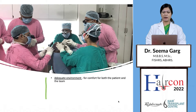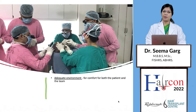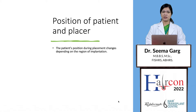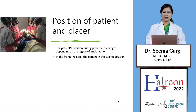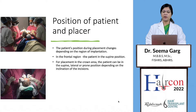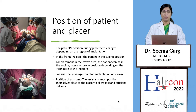An adequate environment is very important for comfort of both the patient and the team. In this picture, three persons — two surgeons and one technician — are working on the patient's head, all sitting comfortably, with simultaneous implantation ongoing and the patient also sitting comfortably. The height of the operating table must be adequate for each change of position, and the placer's chair must have height adjustment. The position of the patient and placer changes depending on the region of implantation: the frontal region requires supine position; for the crown area, the patient can be supine, lateral, or prone depending on the incision inclination, and a thigh massage chair is used. The assistant must be positioned close to the placer for fast and efficient graft delivery.